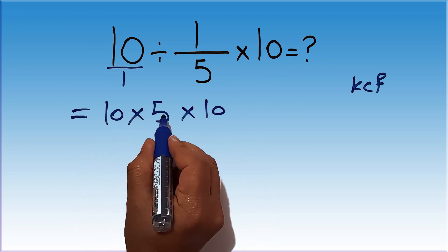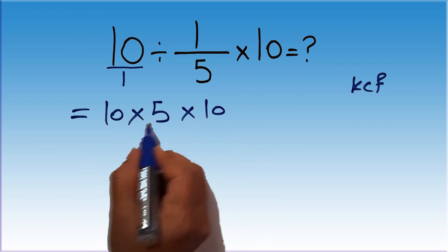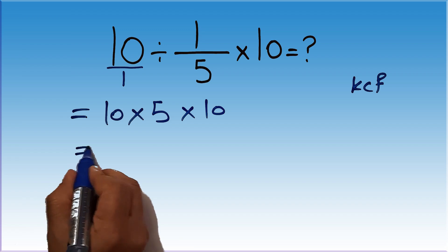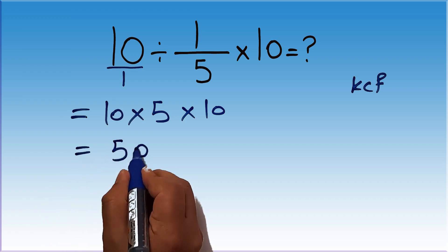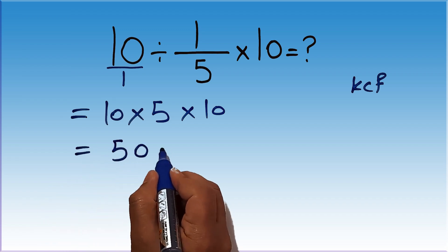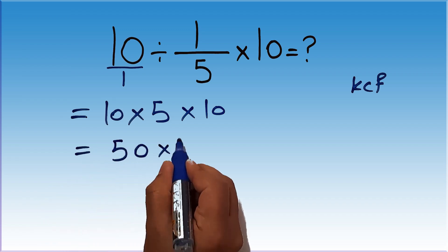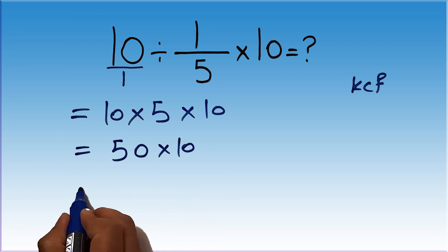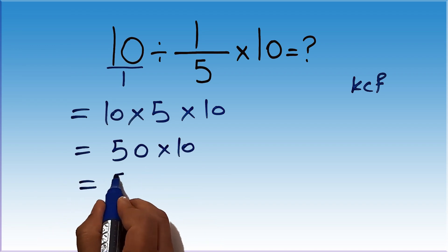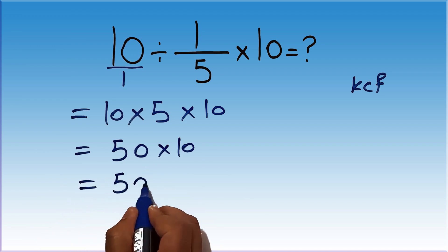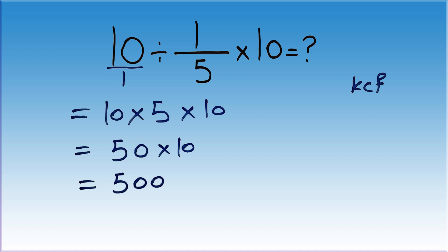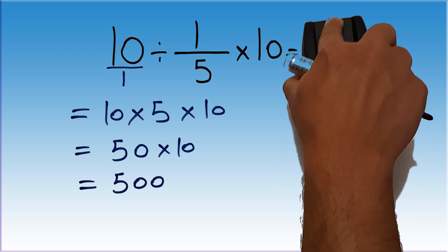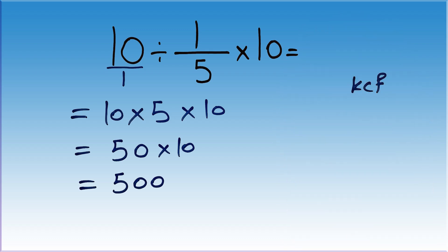10 times 5 gives us 50. So, 50 times 10, which equals 500. Our final answer to this problem is 500.